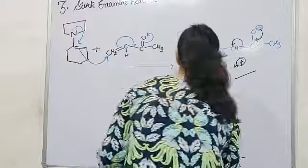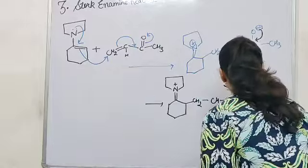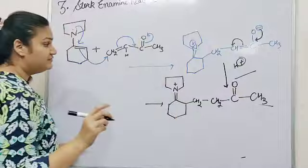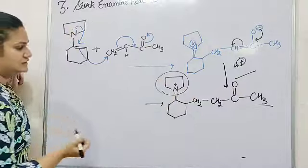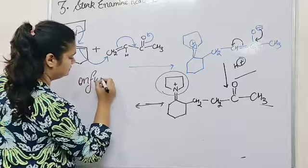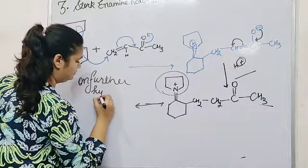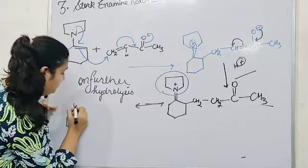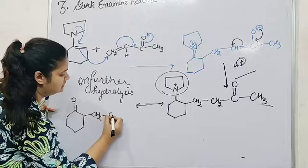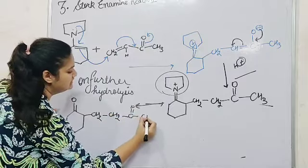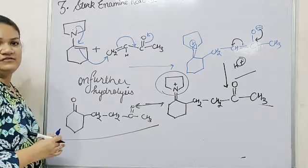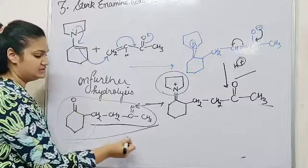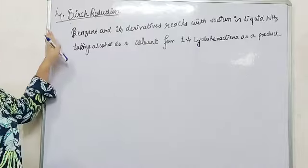That is CH₂, CH double bond C, O⁻, and CH₃. Now this negative charge will come back to its position, this double bond will go here, and it will extract H⁺ from the solvent. On further hydrolysis, this nitrogen group will be replaced by oxygen. The final product contains a double bond O, CH₂, CH₂, C double bond O, CH₂. Therefore, this reaction is helpful for chain lengthening of the compound.